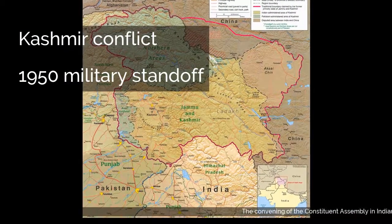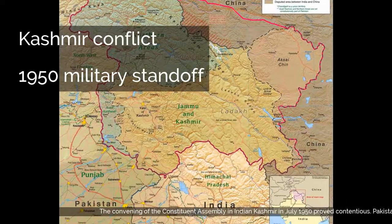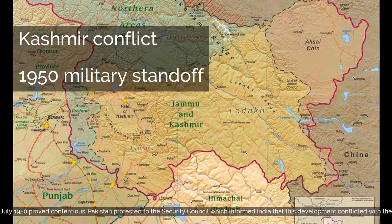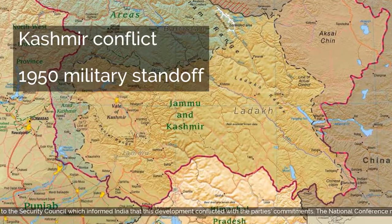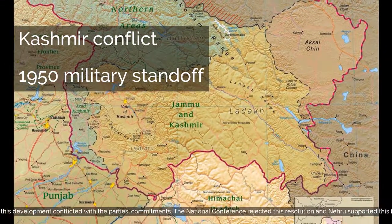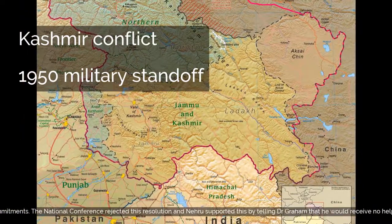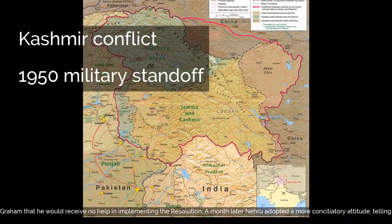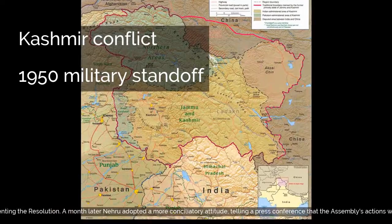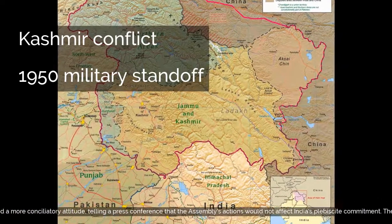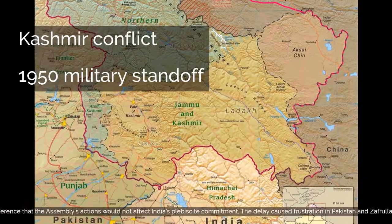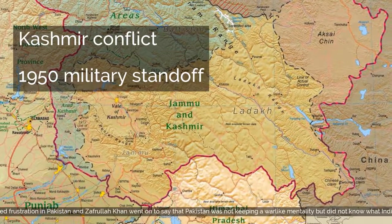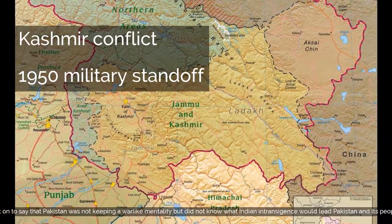The convening of the Constituent Assembly in India and Kashmir in July 1950 proved contentious. Pakistan protested to the Security Council, which informed India that this development conflicted with the party's commitments. The National Conference rejected this resolution and Nehru supported this by telling Dr. Graham that he would receive no help in implementing the resolution. A month later Nehru adopted a more conciliatory attitude, telling a press conference that the Assembly's actions would not affect India's plebiscite commitment. The delay caused frustration in Pakistan, and Zafarullah Khan said that Pakistan was not keeping a warlike mentality but did not know what Indian intransigence would lead Pakistan and its people to. India accused Pakistan of ceasefire violations and Nehru complained of warmongering propaganda in Pakistan.